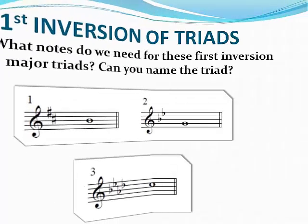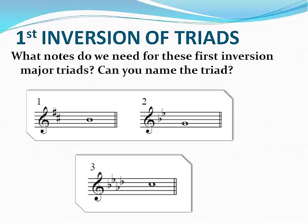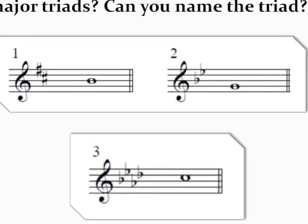Let's figure out what notes we need in order to write these as major triads. Let's do the first one together. Because these are going to be first inversion triads, we know that B is the third of the chord. Since we know B is the third, we need to go down a major third to G to find the root. Now we know the triad has G, B, and a third above B which is D. This is a G major triad, and in order to write this in first inversion, we'll add a D and then a G above the B as well.